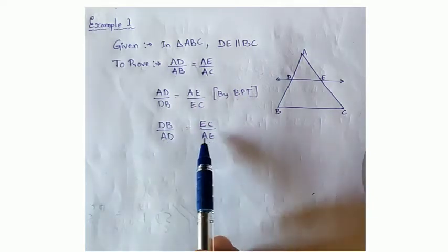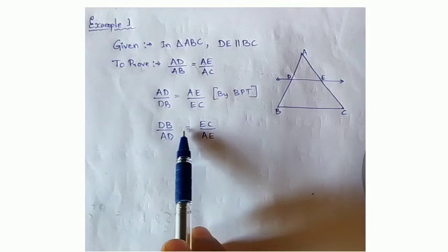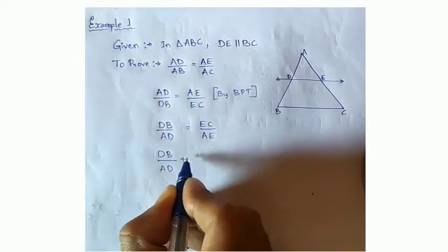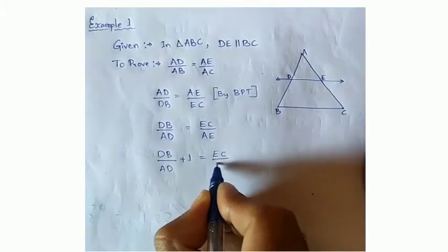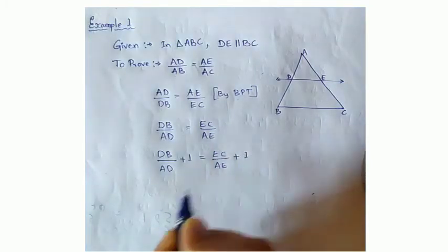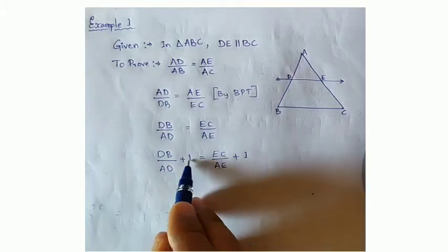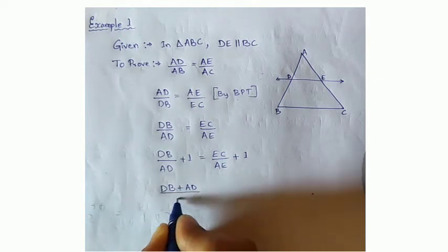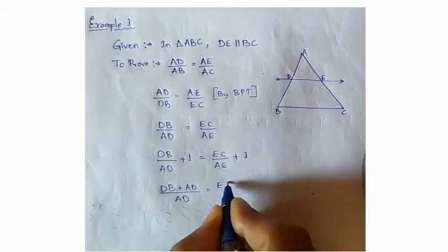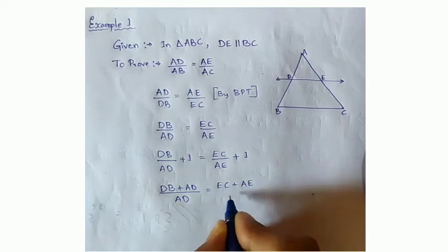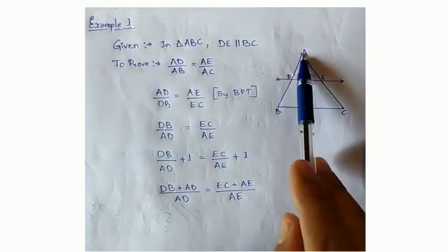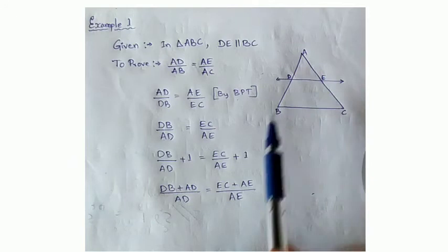Here AD is there, here AE is there. So what I will do? I will add 1 on both sides. So it will be DB by AD plus 1 equal to EC by AE plus 1.